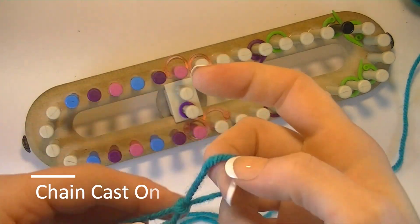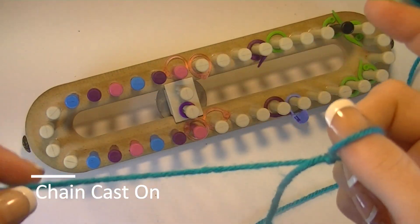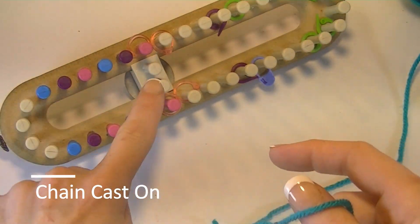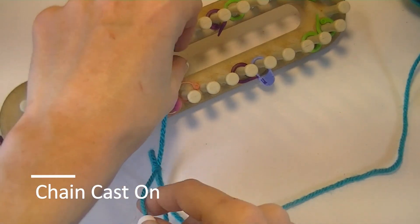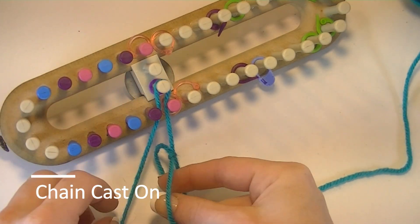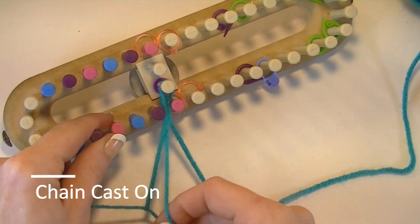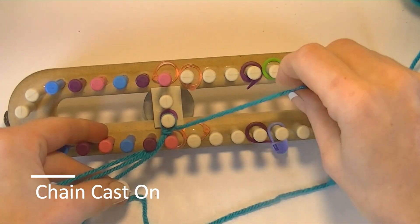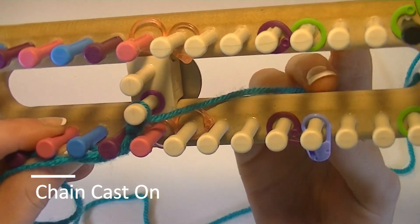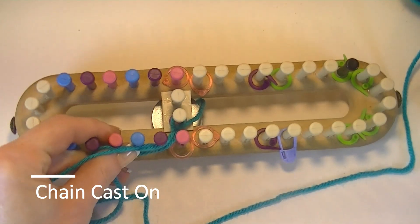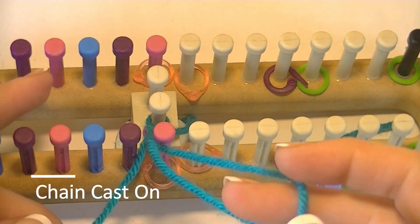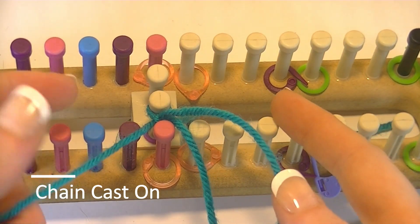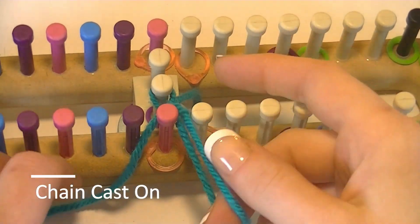I will be using a chain cast on to cast on all 24 pegs. I did a slip knot. I want to make sure it is slipping from the working yarn and not that tail, which it is. Since this is my first peg, I place that working yarn behind that peg. This loop here, I pull the working yarn through that loop.